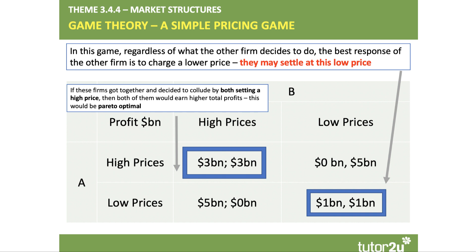Price collusion is illegal, with fines and potential prison sentences for price fixing. Game theory shows that while it might seem rational to cut prices, if all firms do it they end up with less profit than if they had colluded. Having agreed to a high price, however, there is then an incentive for each firm to cheat on the agreement and undercut the rival.